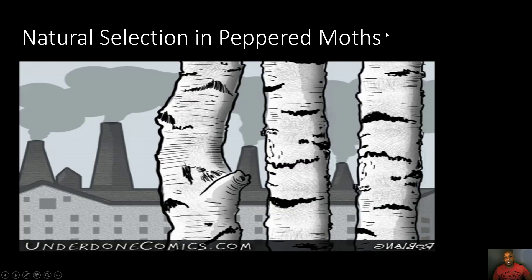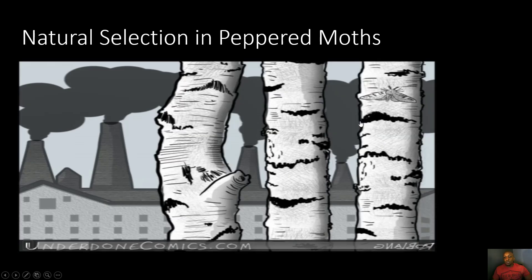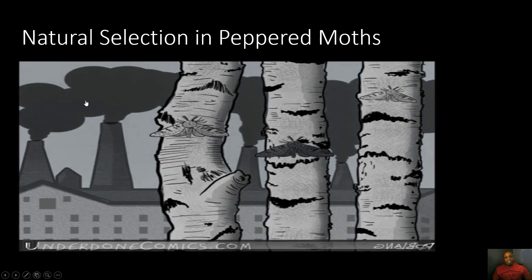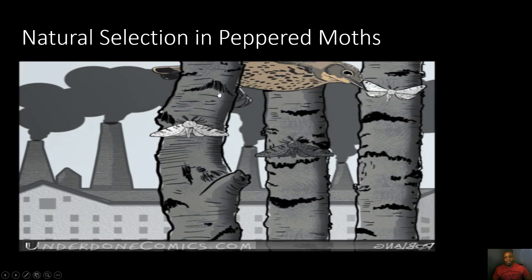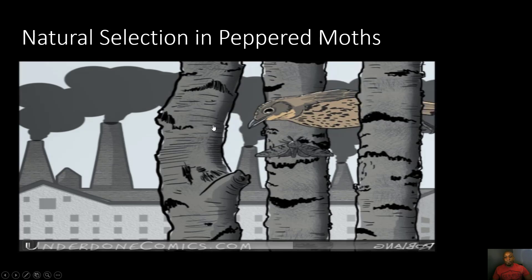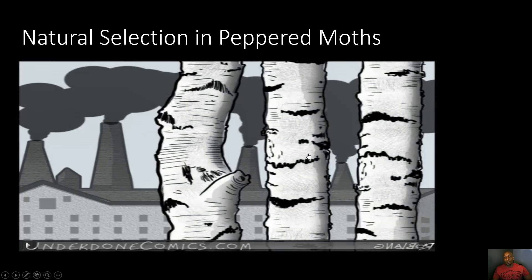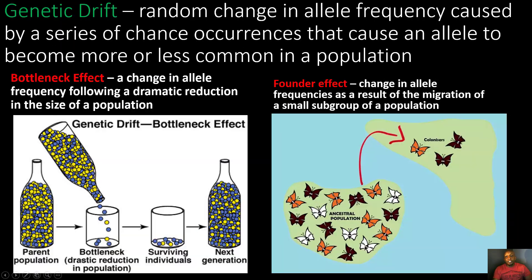Before the industrial revolution, the bark on trees was lighter, so lighter-colored peppered moths could blend in better, while darker moths were easier to spot. After the industrial revolution darkened the bark on trees, predators could more easily spot and eat the lighter-colored peppered moths. So the darker-colored peppered moths were naturally selected for to survive and reproduce because they blended in better.